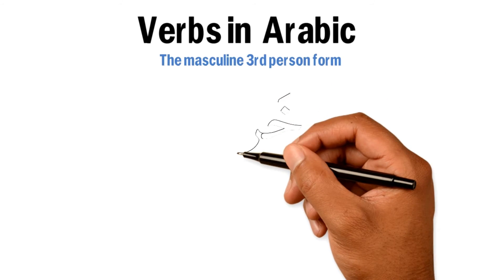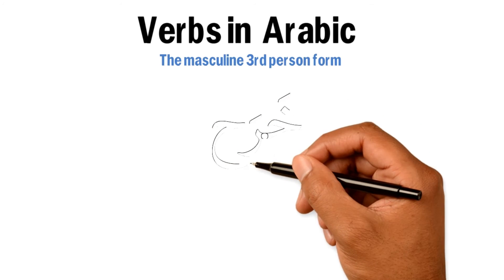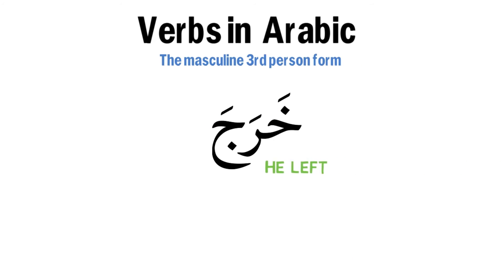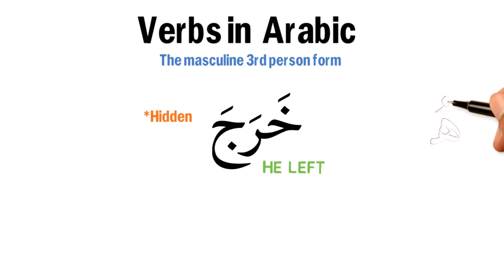Let's start with the verb خرج. Where is the فاعل here? We know it's مستتر, meaning it's hidden. And the فاعل is actually هو.